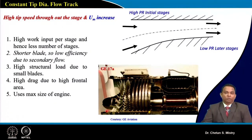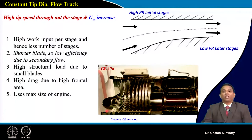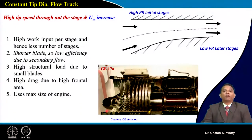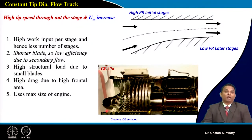When we are looking for a compact, lightweight engine or one fitted in a fuselage for military applications, we expect high per-stage pressure rise. Under that condition, constant tip diameter configuration is preferred. Also, for military applications, efficiency is not a major concern, so this configuration is good for such compressor design.